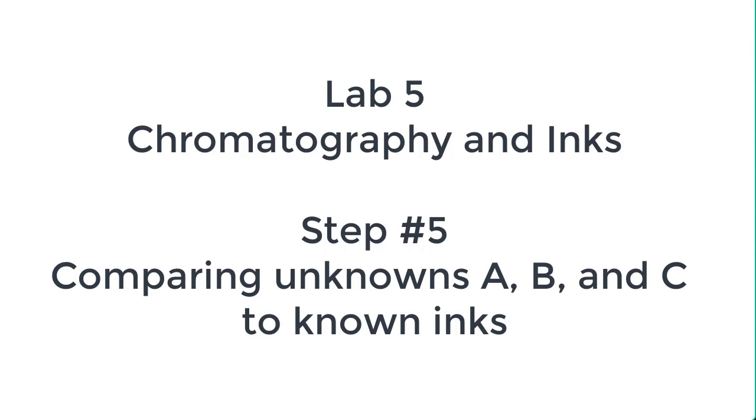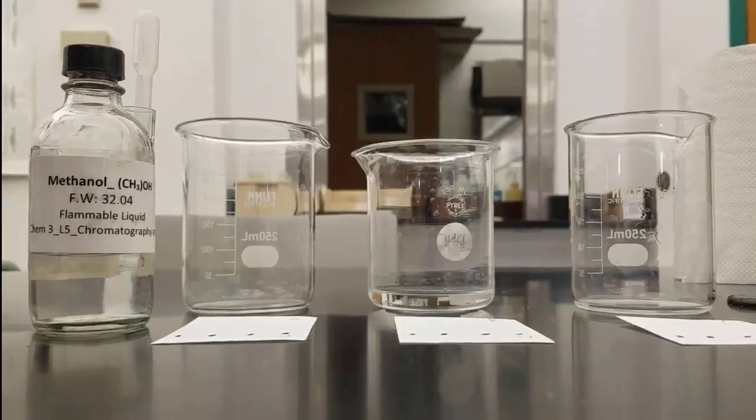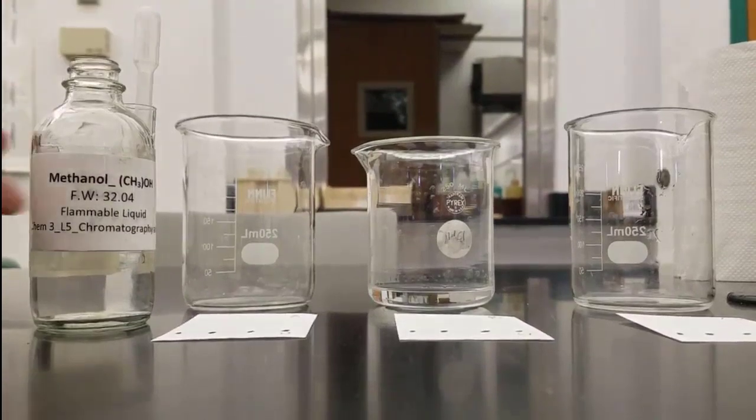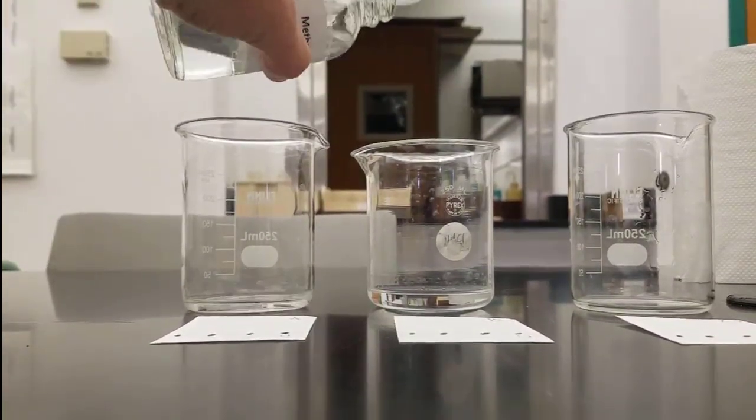Next up, we're going to do step number five. We're going to look at three different unknowns. So we have Sharpie, Crazy Art, and Crayola, and then a fourth spot now for our unknown. Those have been prepared already.